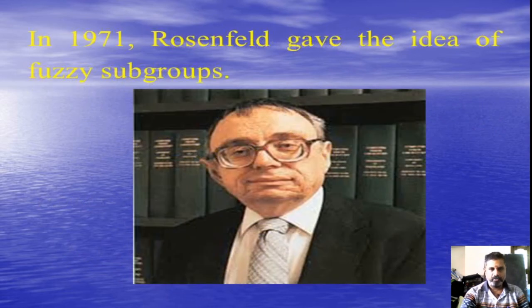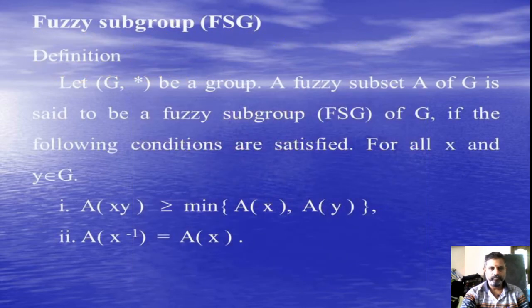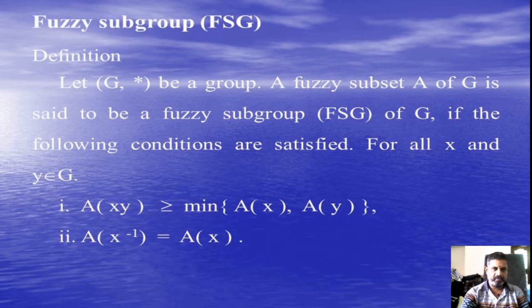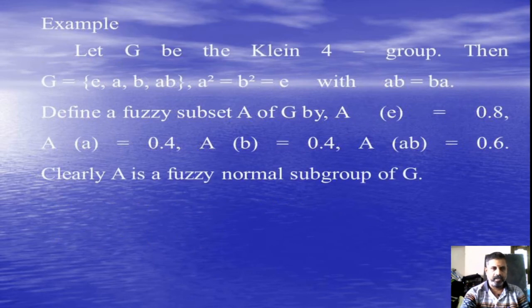In 1971, Rosenfeld gave the idea of Fuzzy Subgroups. Under the definition of a Fuzzy Subgroup, let (G, *) be a group. A Fuzzy Subset A of G is stated to be a Fuzzy Subgroup of G if the following conditions are satisfied. For all x and y belongs to G: First condition, A(x*y) ≥ min{A(x), A(y)}. Second, A(x^-1) must equal A(x).